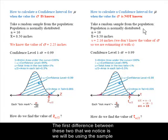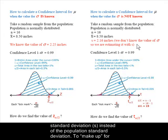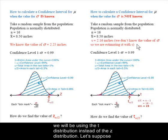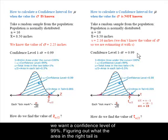The first difference between these two that we notice is we will be using the sample standard deviation, S, instead of the population standard deviation. To make up for this extra variability of a sample standard deviation that varies from sample to sample, we will be using the T distribution instead of the Z distribution. Let's suppose we want a confidence level of 99%.